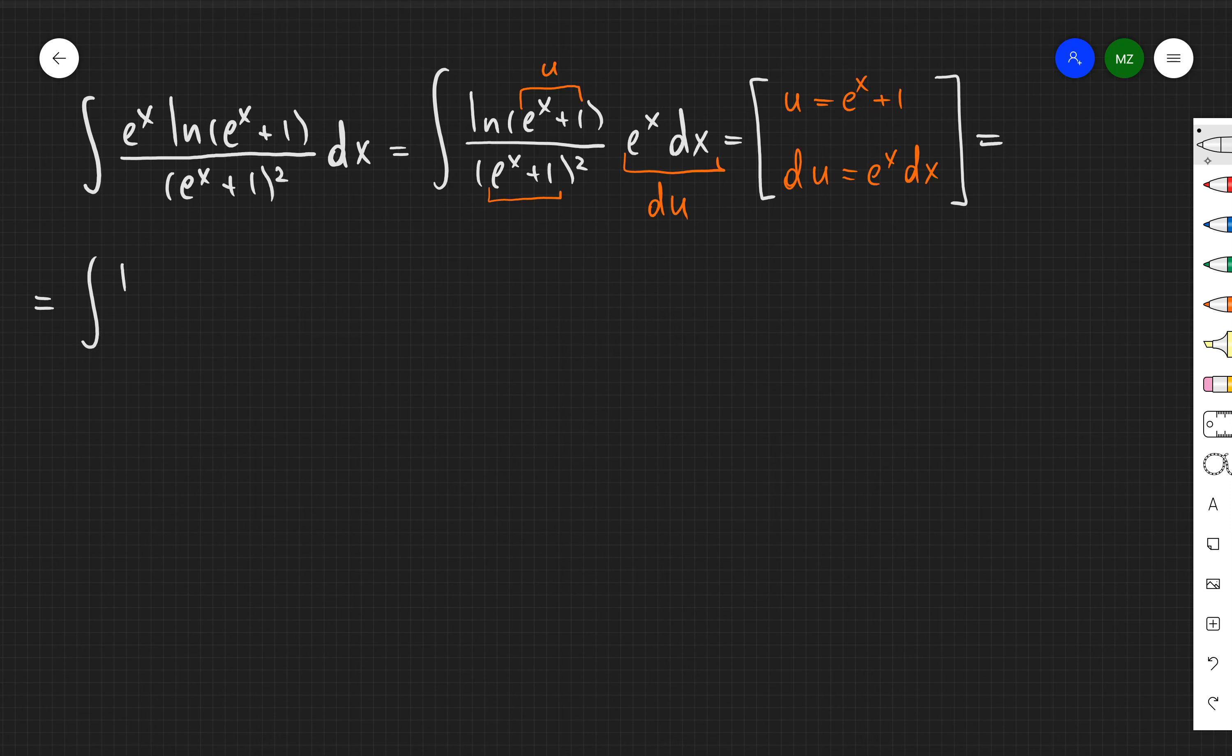And then you see that e to the x times dx is just my du. So I can rewrite my integral as integral of ln of u over u squared times du.